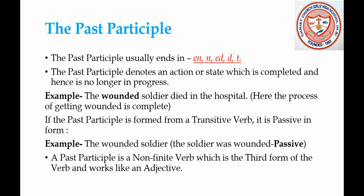Next we have the past participle. The past participle usually ends in 'en', 'n', 'ed', 'd', or 't'. It denotes an action or state which is completed and hence is no longer in progress. So the past participle denotes an action or state which is completed and over.